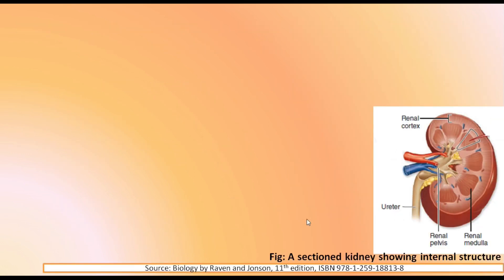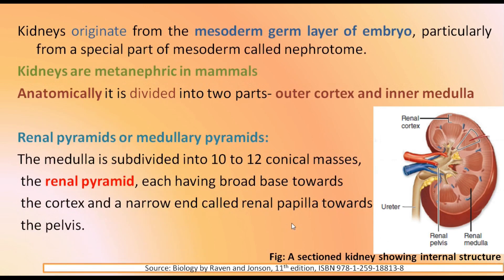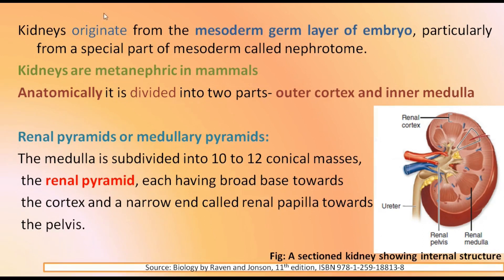This figure shows a section of the kidney showing the internal structure. The origin of the kidney is the mesoderm layer of the embryo, particularly from a special part of the mesoderm called the nephrotome. Kidneys are metanephric in mammals and can be divided anatomically into two parts: the outer cortex and the inner medulla.